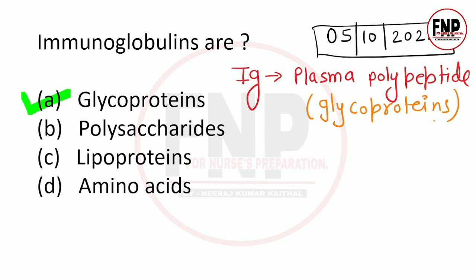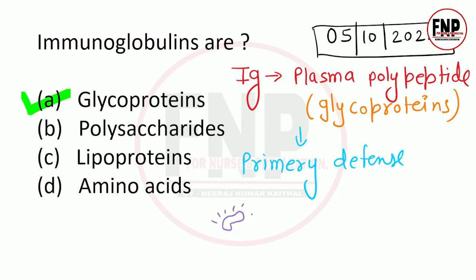Yeh immunoglobulin humaare shareer mein primary defense mechanism ke roop mein kaam karte hain. Jaise ki maano body ke andar koi micro-organism - bacteria, fungus ya virus enter hua jo body ke liye harmful hai - toh yeh immunoglobulin cells turant isse identify karenge aur phir attack karke destroy kar denge. Yaad rakhiyega: immunoglobulin ko antibodies ke roop mein bhi jaante hain, yeh plasma polypeptides hain, glycoprotein keh sakti hain, aur inका kaam defense ko banaye rakhna hai.